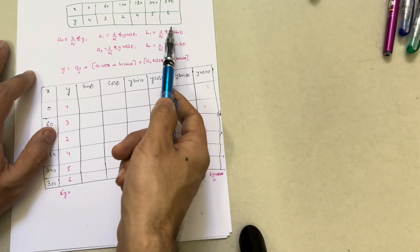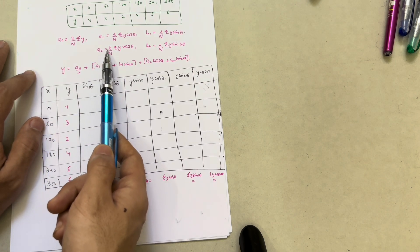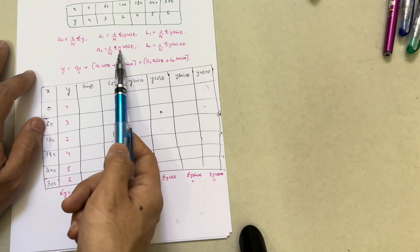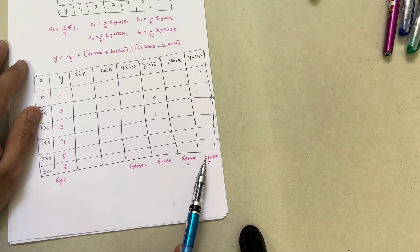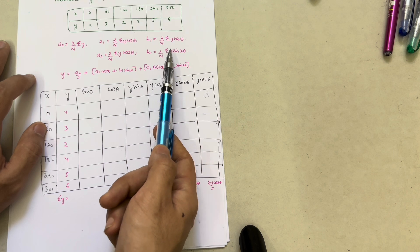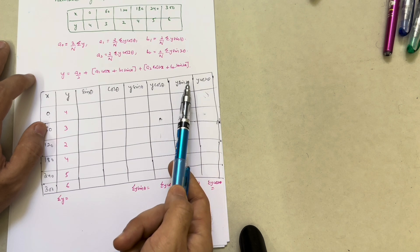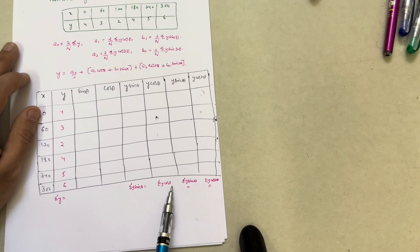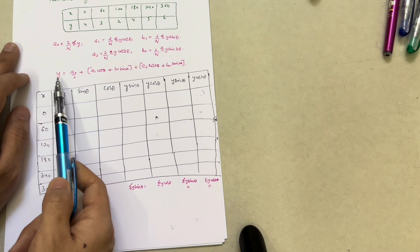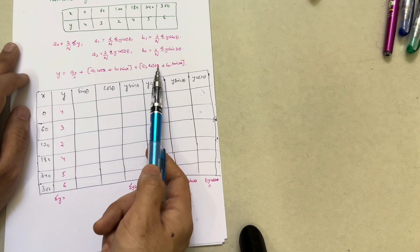B1 is equal to (2/N) × summation of Y·sin(θ), so we need summation of Y·sin(θ). For the second harmonic: A2 is equal to (2/N) × summation of Y·cos(2θ), so we need to calculate Y·cos(2θ) first. Similarly, B2 is equal to (2/N) × summation of Y·sin(2θ), so we calculate Y·sin(2θ). Once we get all these terms we find their summations.